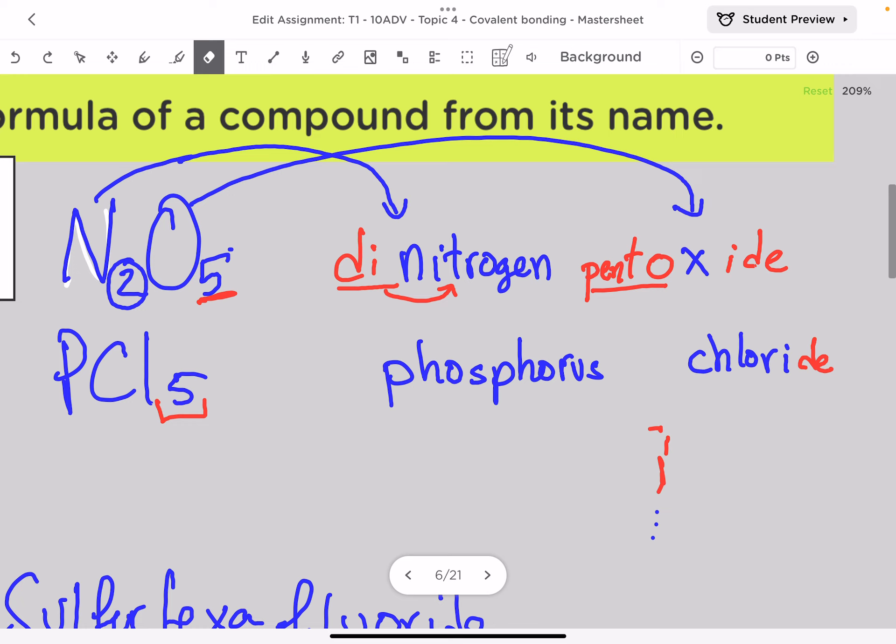Here, no need to put mono. We do not say monophosphorus because it's the first element. But if it was the second element, it is okay to write mono in the middle of the name. Now the five means penta, so I'm going to write the penta prefix next to chloride.